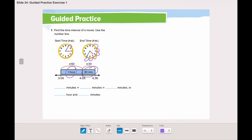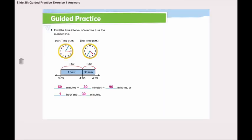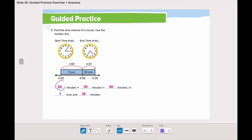We have 1 hour and 30 minutes. The time interval is 1 hour and 30 minutes. Or, let's just calculate it in minutes. 60 minutes plus 30 minutes. 0 plus 0 is 0, 6 plus 3 is 9. So it's 1 hour and 30 minutes, or it has a total of 90 minutes. 60 minutes plus 30 minutes equals 90 minutes, or 1 hour and 30 minutes.